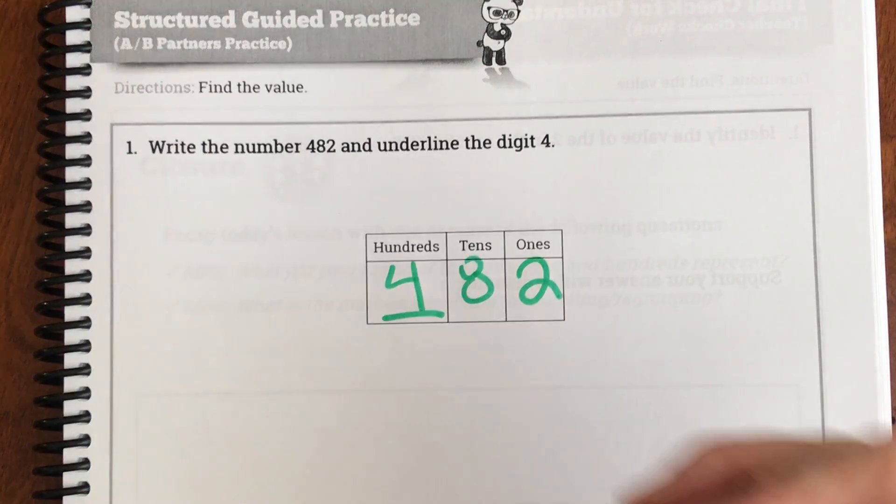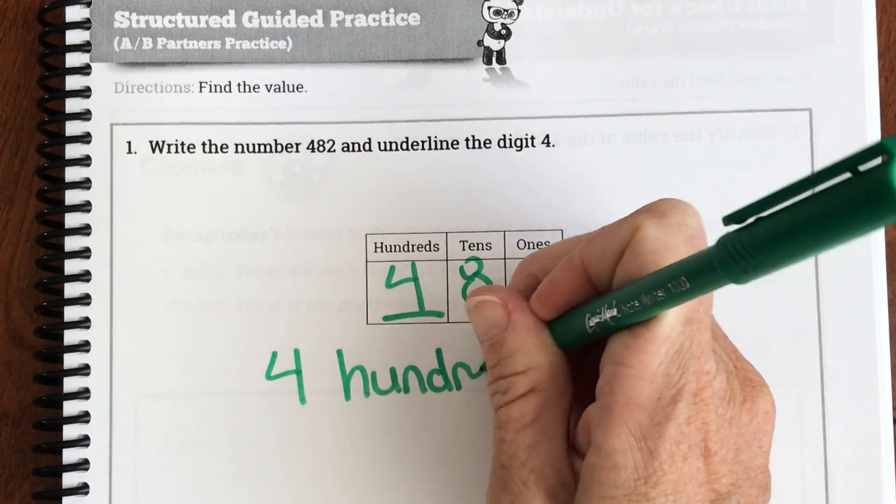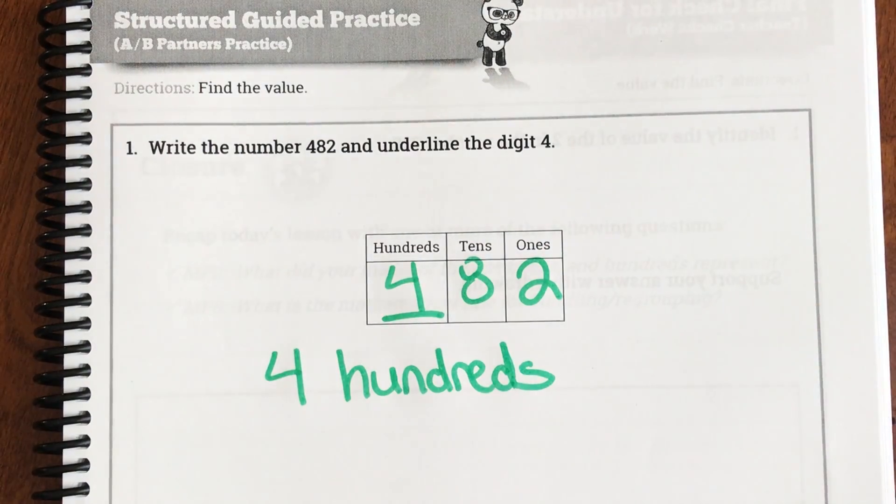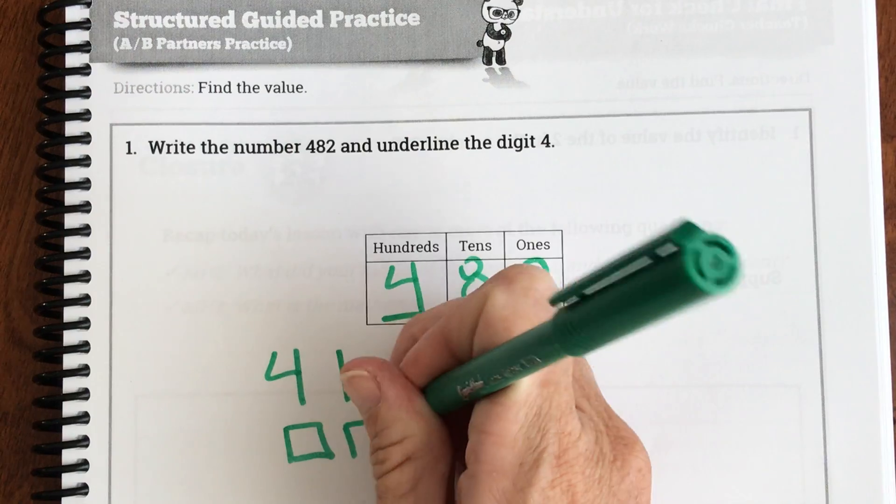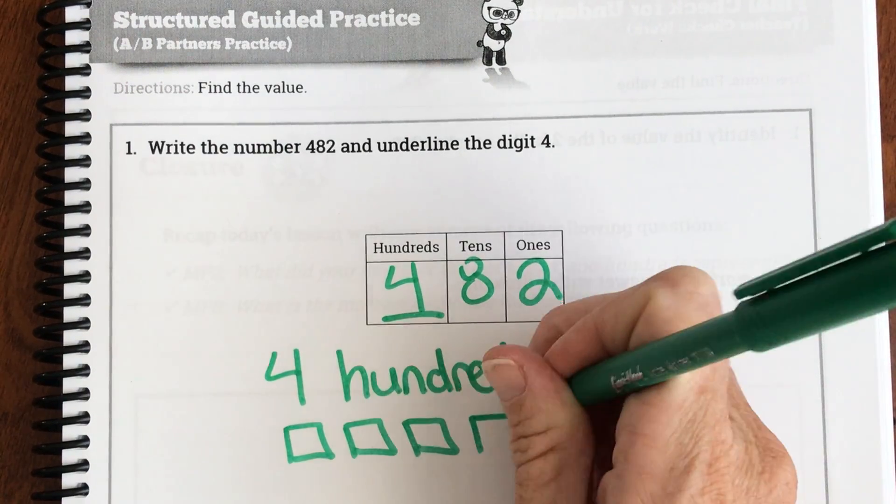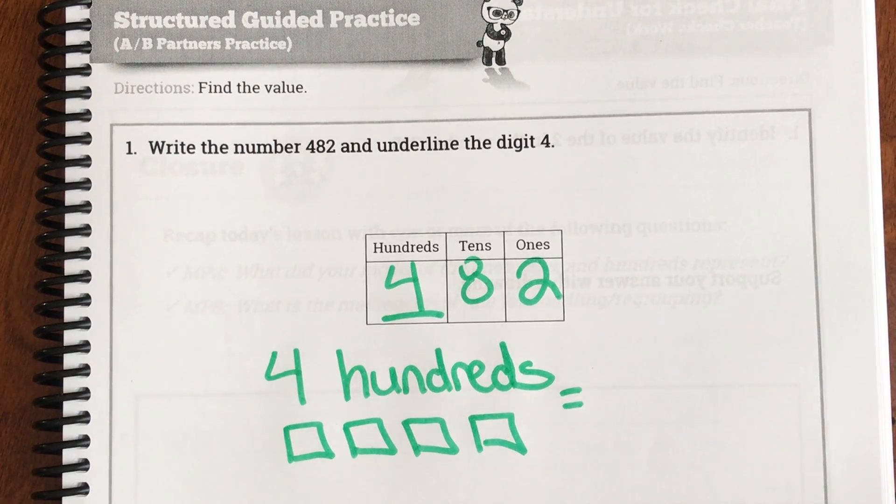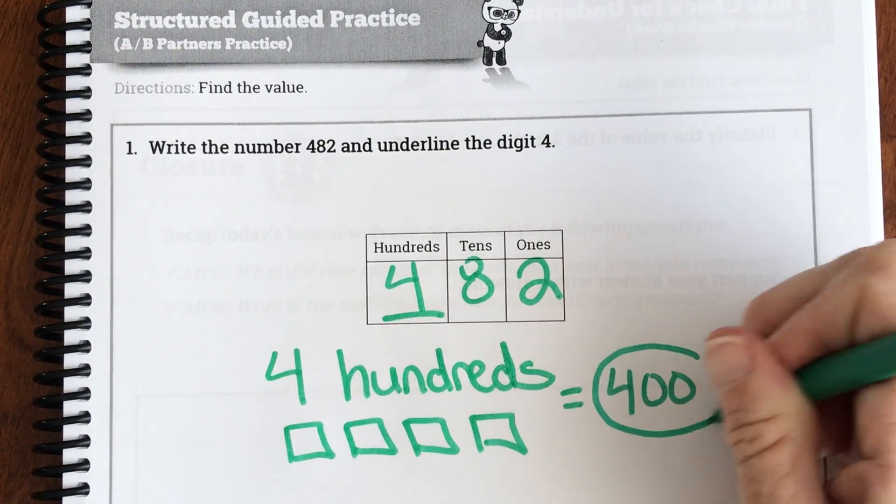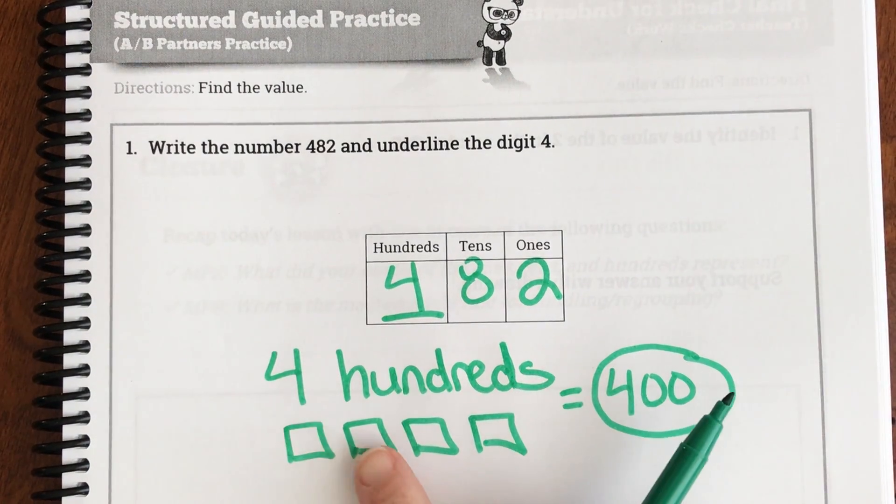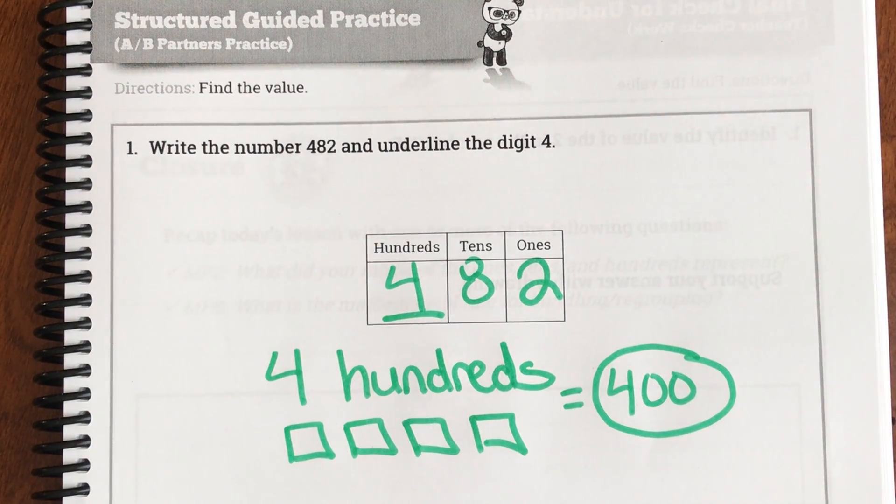So we have four hundreds. Which four hundreds looks like four hundred blocks. So the value of that four is worth 400. Because this is 100, 100, 100, 100. So 400 is what the value is.